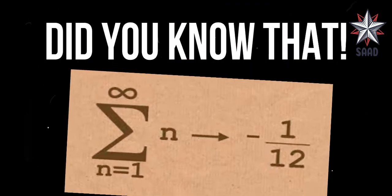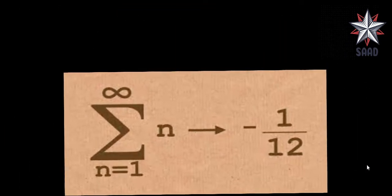Did you know that sum of all positive integers is equal to minus 1 by 12? No? To find out, stick together with me with this series of three.